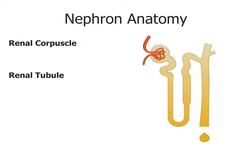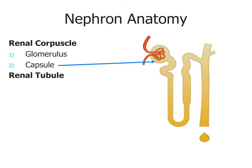Now let's look at nephron anatomy. There are two different regions: the renal corpuscle and the renal tubule. The renal corpuscle consists of the glomerulus and the glomerular capsule or Bowman's capsule. The glomerulus is a very leaky capillary bed under extremely high pressure — an area of filtration where fluid moves out of the bloodstream into the Bowman's capsule. The Bowman's capsule collects all that filtered fluid produced by the glomerulus and puts it into the renal tubule.